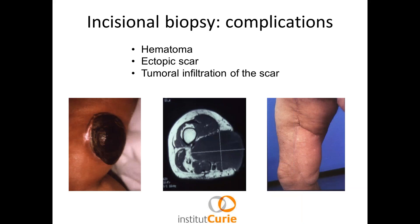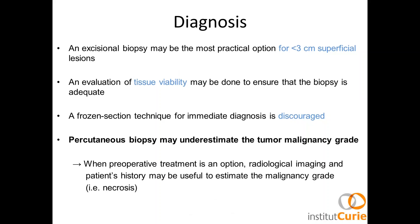Percutaneous guided biopsy is the standard. Incisional biopsy is essentially prohibited because of many complications — hematoma, ectopic scar, and tumor infiltration of the scar — which might necessitate a much bigger operation. For small tumors less than three centimeters that are superficial, an excisional biopsy may be a practical option. An evaluation of tissue viability may be done to ensure the biopsy is adequate.